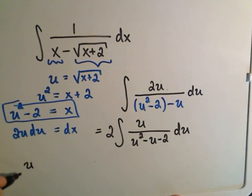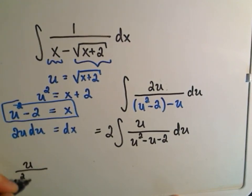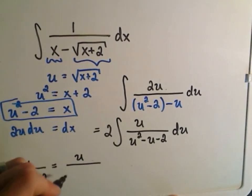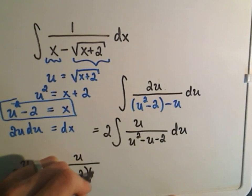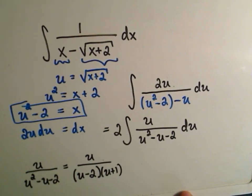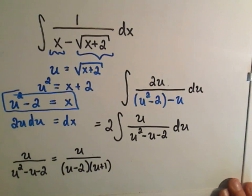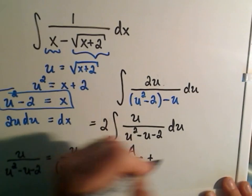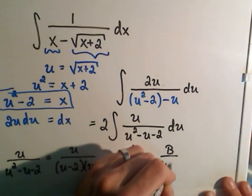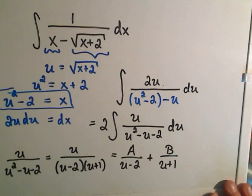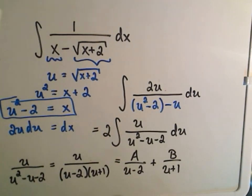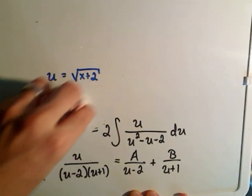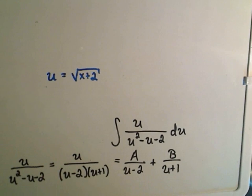So I can do my partial fraction decomposition, u over u squared minus u minus 2. I believe that factors as u minus 2 times u plus 1 in the denominator. And then we have to do our partial fraction decomposition. So we'll get A over u minus 2 plus B over u plus 1. I'm going to go back up to the top here and give myself some room.